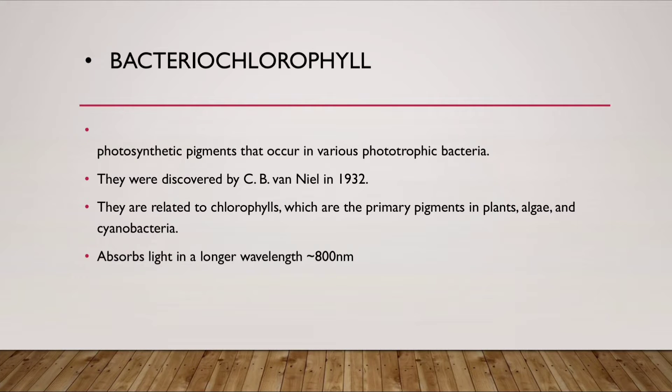Next, bacteriochlorophyll. It is a photosynthetic pigment that occurs in various phototrophic bacteria. They were discovered by C.B. van Niel in 1932. They are related to chlorophylls which are the primary pigments in plants, algae, and cyanobacteria. It absorbs light at a longer wavelength, that is 800 nanometers.